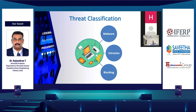The next threat is intrusions — attackers try to gain access to our systems. They break into system protection by trying to access our systems through phishing attacks such as email phishing and URL phishing. They also try intrusion by guessing passwords, changing passwords, getting Wi-Fi passwords, and gaining network access. All these things come under intrusions.